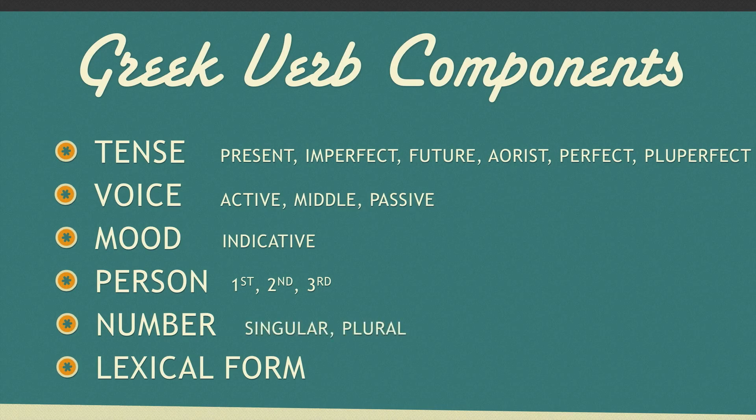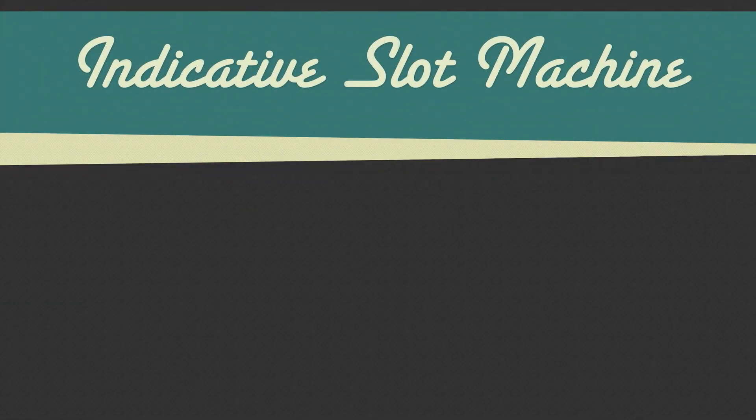The textbook will explain the different nuances of the Greek tenses and the three voices. This video will focus on how they are formed. A Greek verb contains all of these components. The formation of these verbs is initially learned best with what I call the indicative slot machine.